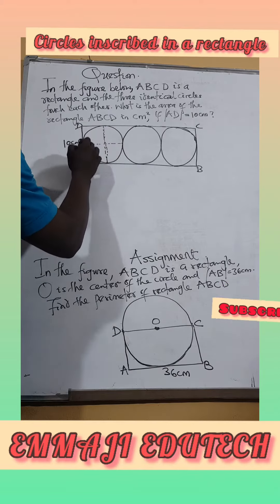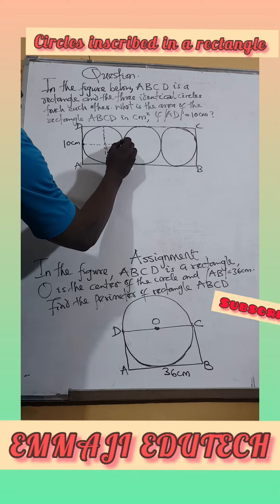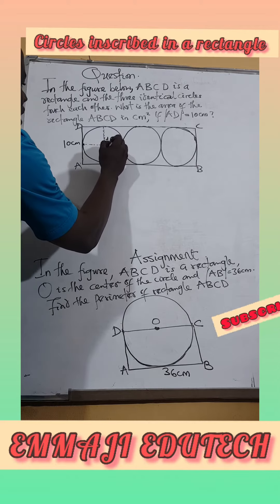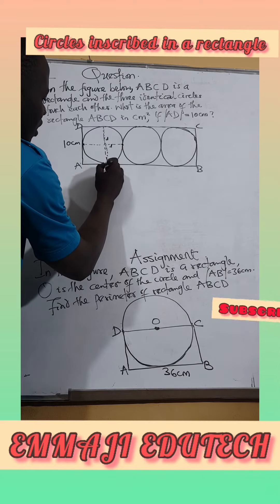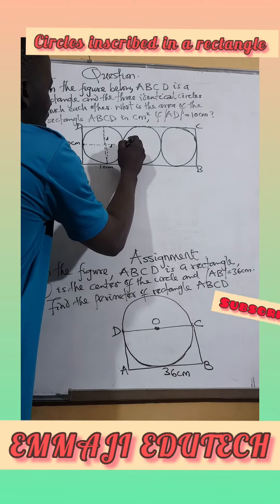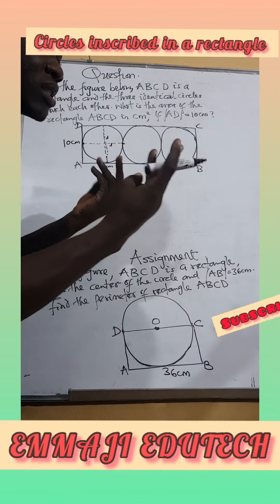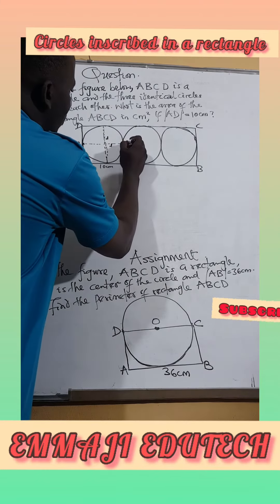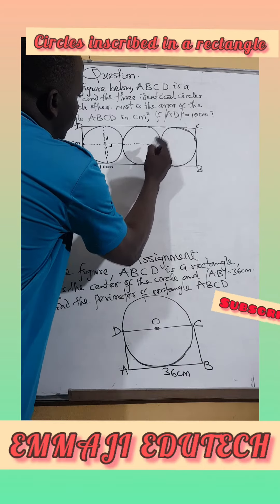And if here is equal to line AD, that means that here to here which is also a diameter should also be 10cm. Here and we are told that three identical circles. That means from here to here should be 10cm.